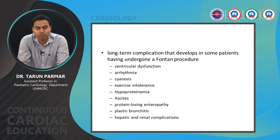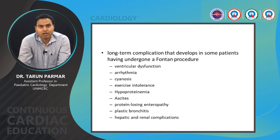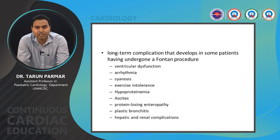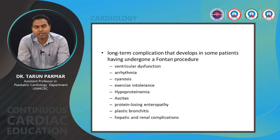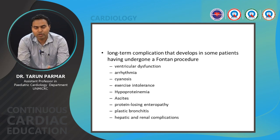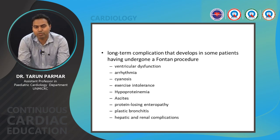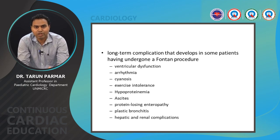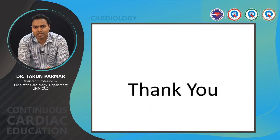The take-home message is that tricuspid atresia is a very critical CHD that can present with decreased or increased pulmonary blood flow. It is an admixture physiology lesion requiring early diagnosis and treatment in the form of a BT shunt or PA band in the initial stage, followed by BDG, and then Fontan completion at a later age. Thank you very much.